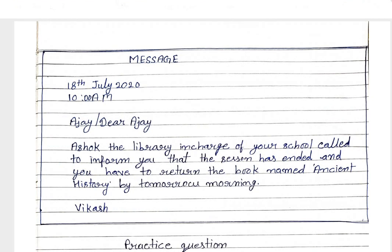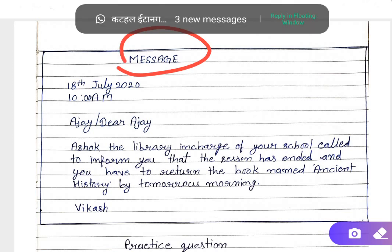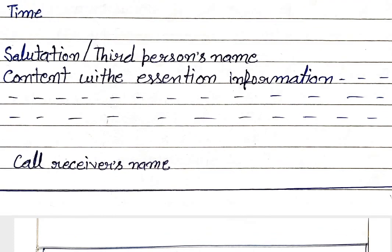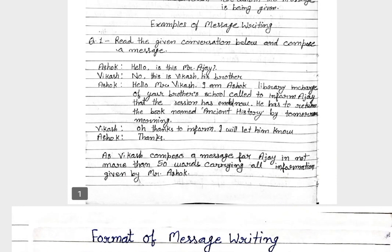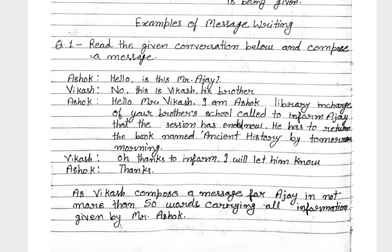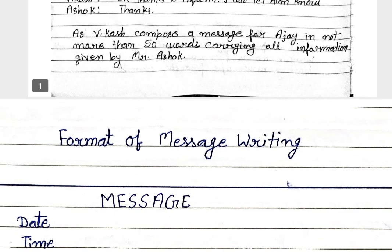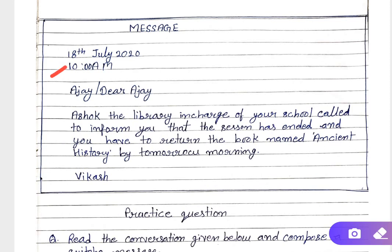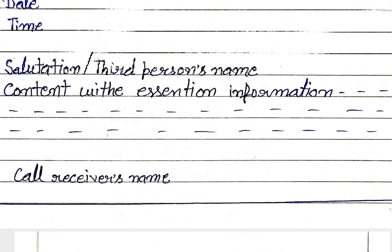As usual, we write MESSAGE first — M-E-S-S-A-G-E — and all these letters should be in capitals. After that, we write the date in correct format, meaning the month name, not the month number. Then we write the time. The time was not given in the question, so you can write down whatever time you want. I have written here 10 AM.